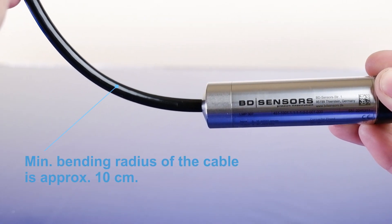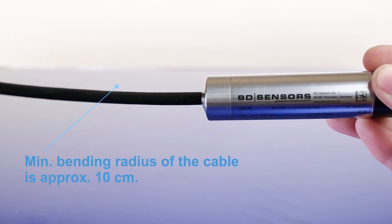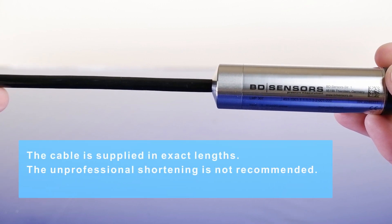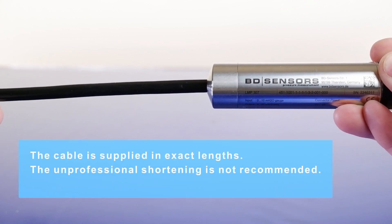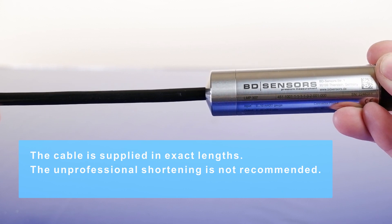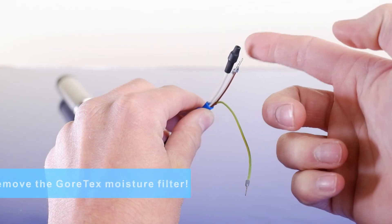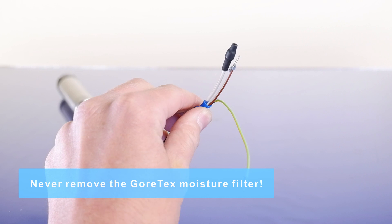Minimum bending radius of the cable is approximately 10 cm. The cable is supplied in exact length and unprofessional shortening is not recommended. Never remove the Gore-Tex moisture filter.